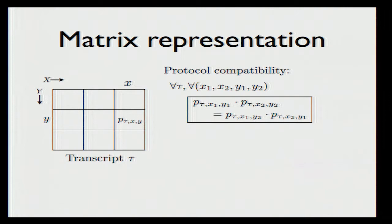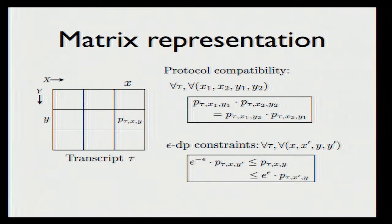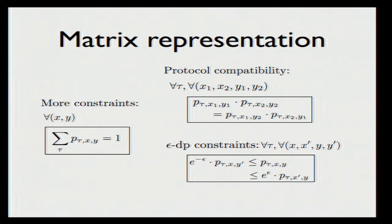The differential privacy constraint that must be satisfied results in the following linear inequalities, which follows directly from the definition of differential privacy. Because these are probabilities, we have additional constraints that they should all sum to one. At this step, I have converted the requirement that tau is a transcript of a differentially private protocol into a set of constraints, which are mostly linear except for the top right corner. The main technique in this work is then to take this large program and convert it into a short linear program — it's large because there can be exponentially many transcripts — and we show how to combine them to obtain a short linear program, which is much easier to analyze for specific Boolean functions.